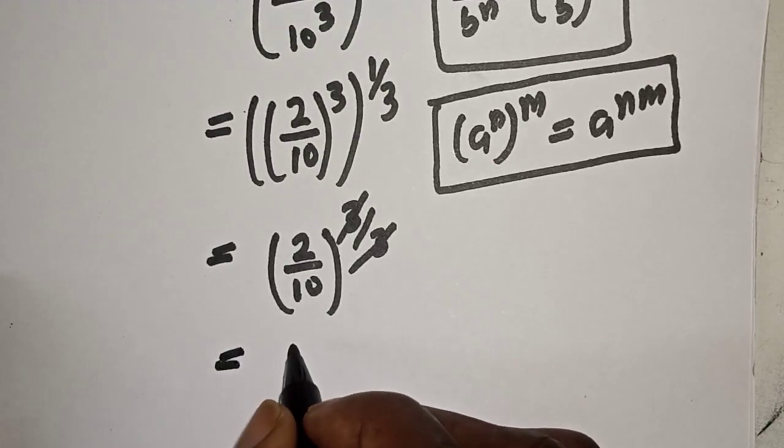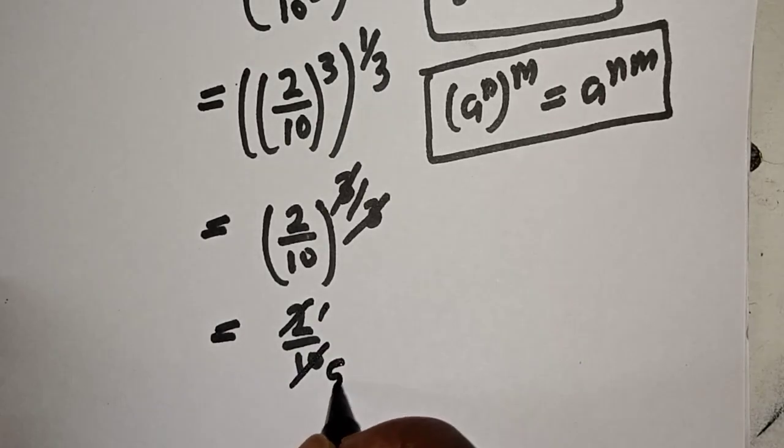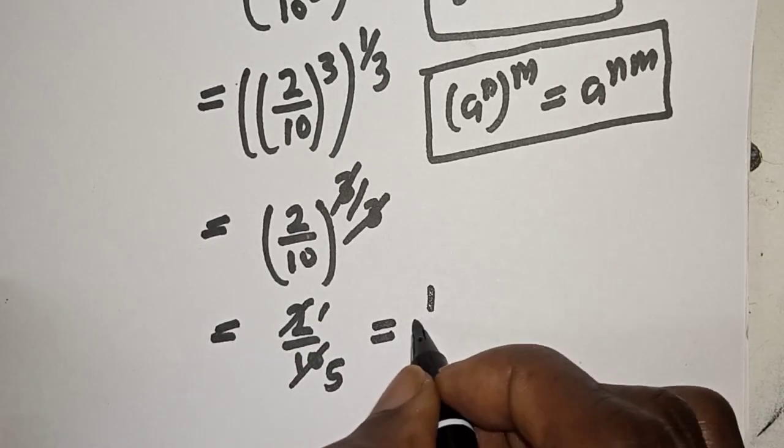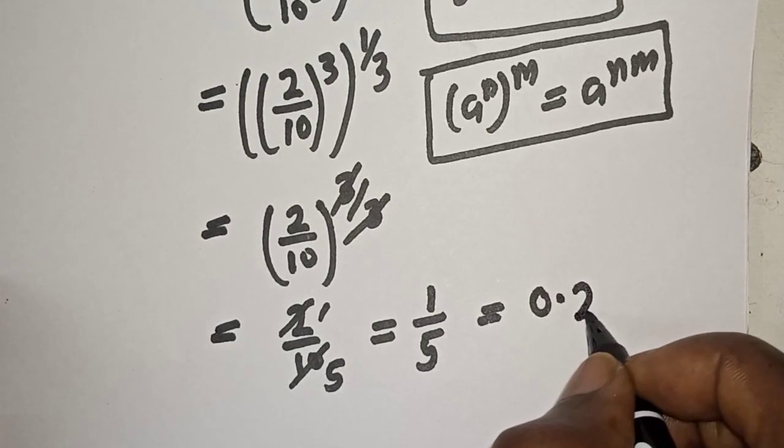This is equal to 2 over 10. Then simplifying: 2 divides into 2 gives 1, and 2 divides into 10 gives 5. This is equal to 1 over 5, which is equal to 0.2.